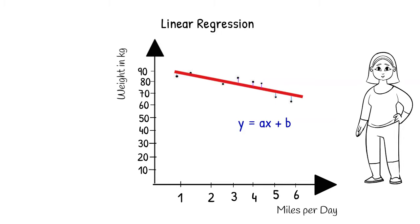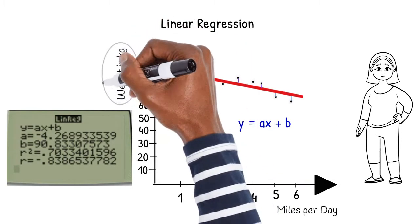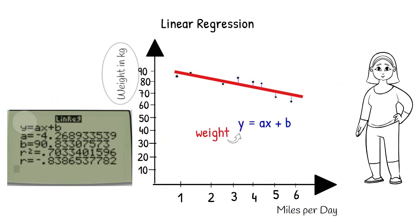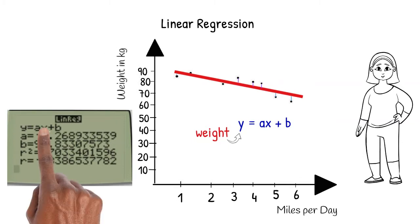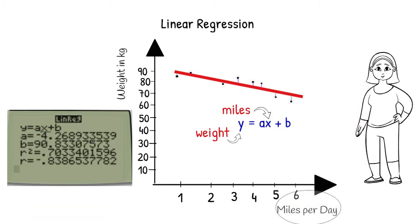Let's say we use the TI-84 to determine the equation of the line and get this display. Let's talk about what that means. Look at the label on the y-axis of the scatter plot. In this study, y represents the weights of women. Now, look at the label on the x-axis. In this study, x represents the miles walked per day.